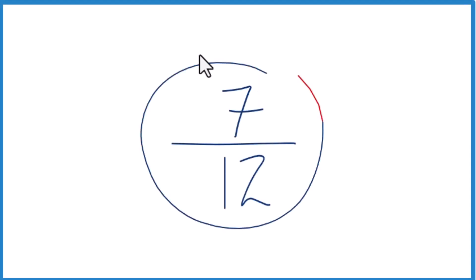Let's write the fraction 7 twelfths as a decimal. Here's how we do that. We look at 7—it's smaller than 12. So when we divide 7 by 12, we know we're going to get a number less than 1.